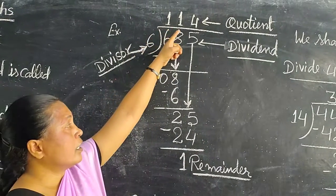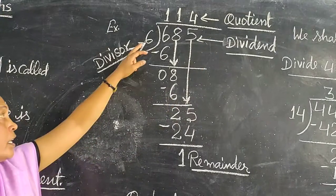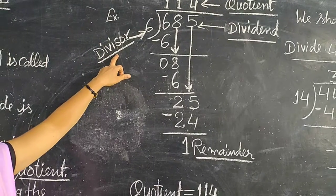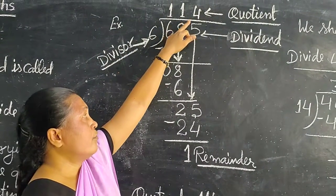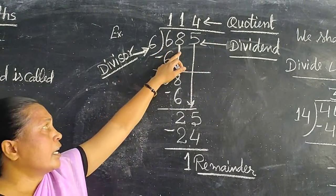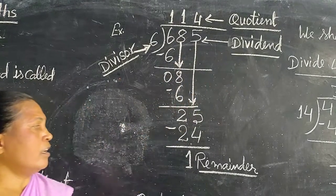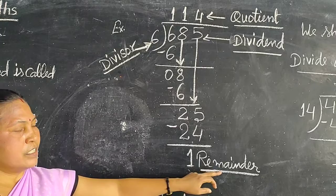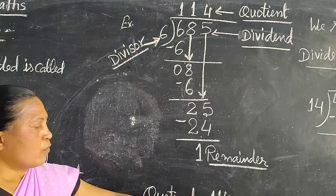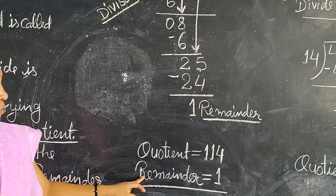One is the remainder, and one hundred forty is the quotient. This six is your divisor. One hundred forty is the quotient, and one is the remainder.